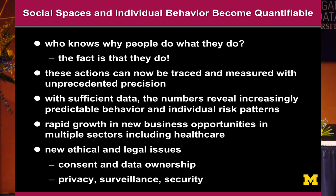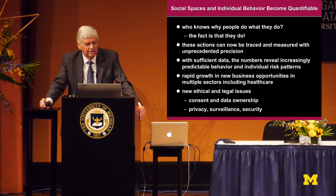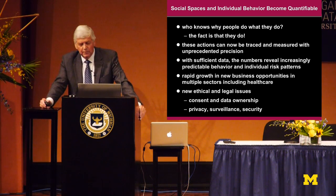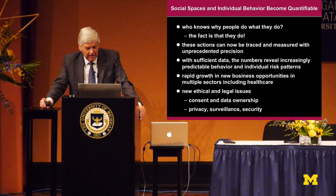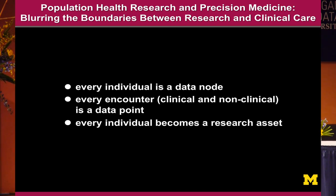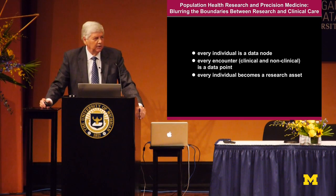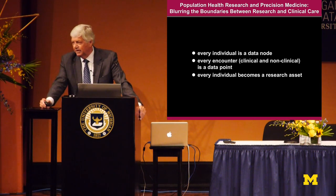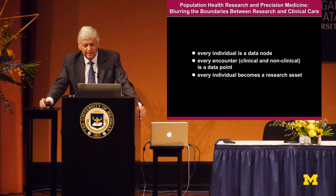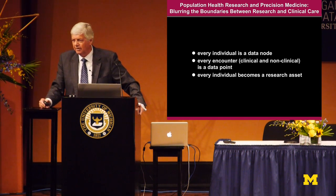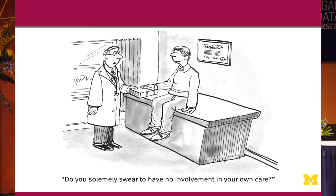With sufficient data, the numbers do reveal increasingly predictable behavior and individual risk patterns. How far that can then be used for risk mitigation obviously raises a number of very complex issues. Most importantly, all of this blurs the distinction between life inside a clinical encounter in a clinical facility versus life outside. Because essentially each one of us becomes a data node. Every encounter, whether it be a clinical or non-clinical encounter, is a data point. And in that sense, every individual becomes a research asset. There is a great cultural reticence within the high altar of medicine as to how far patients should actually be involved in their own care — but it's happening, whether we like it or not.